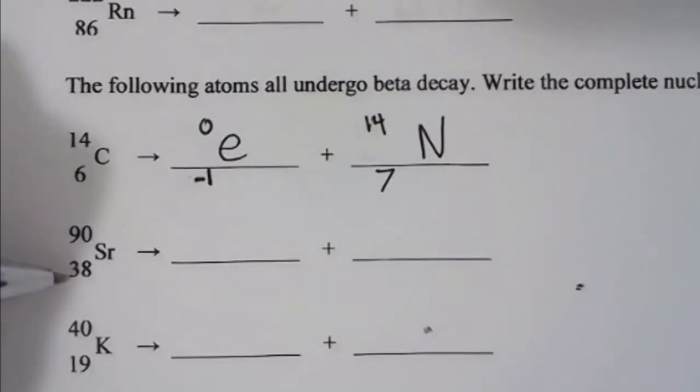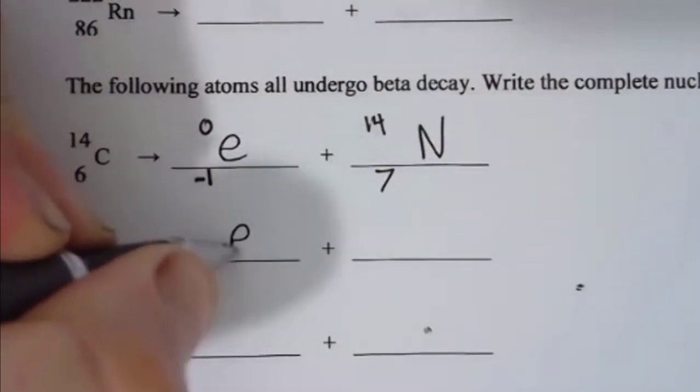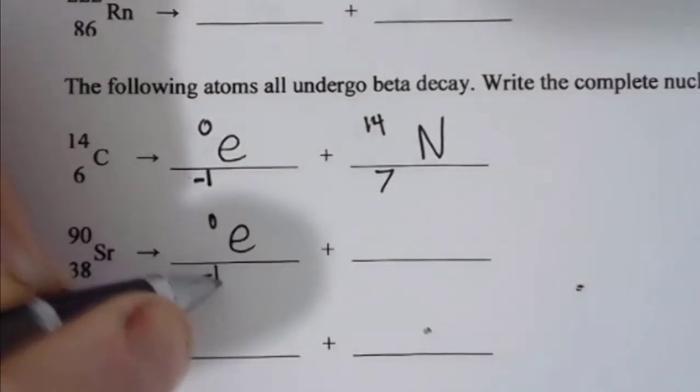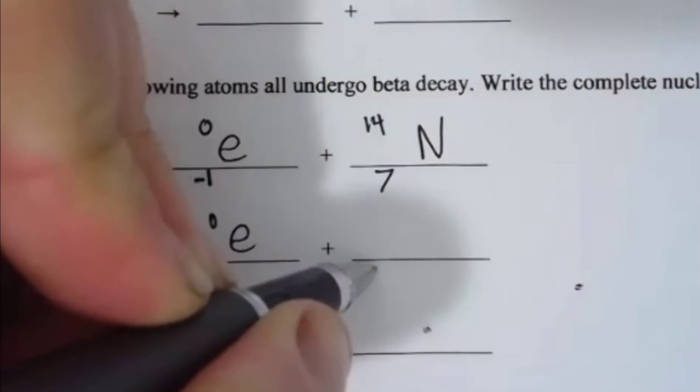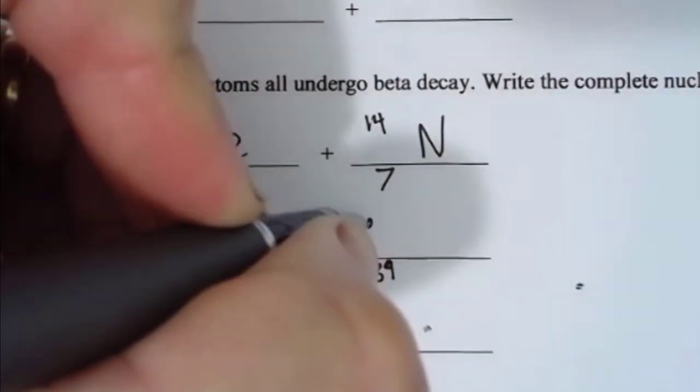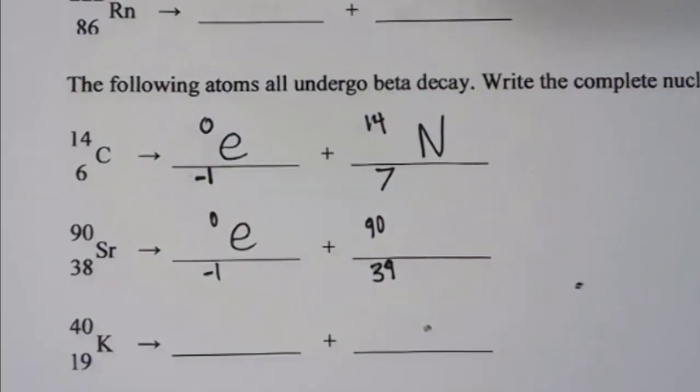Element 38 is strontium. Again, it's a high-energy electron with notation 0/-1, so the atomic number goes up to 39 and the mass stays the same. We look for element 39.